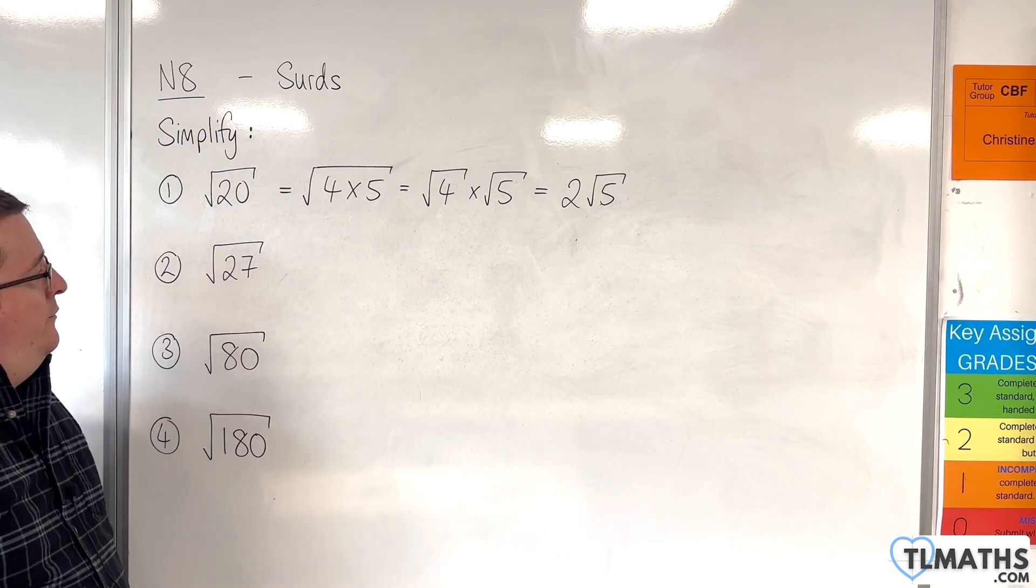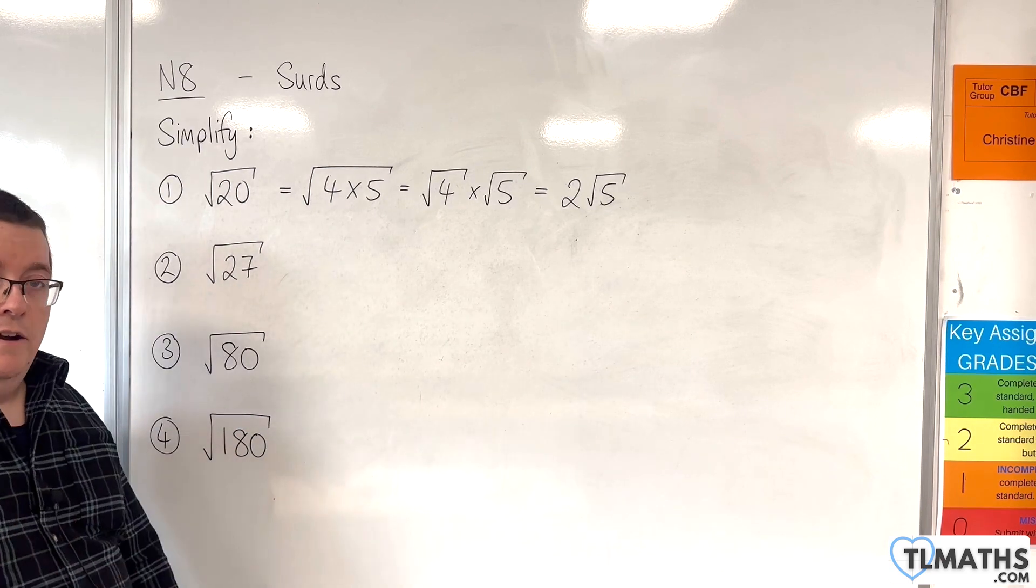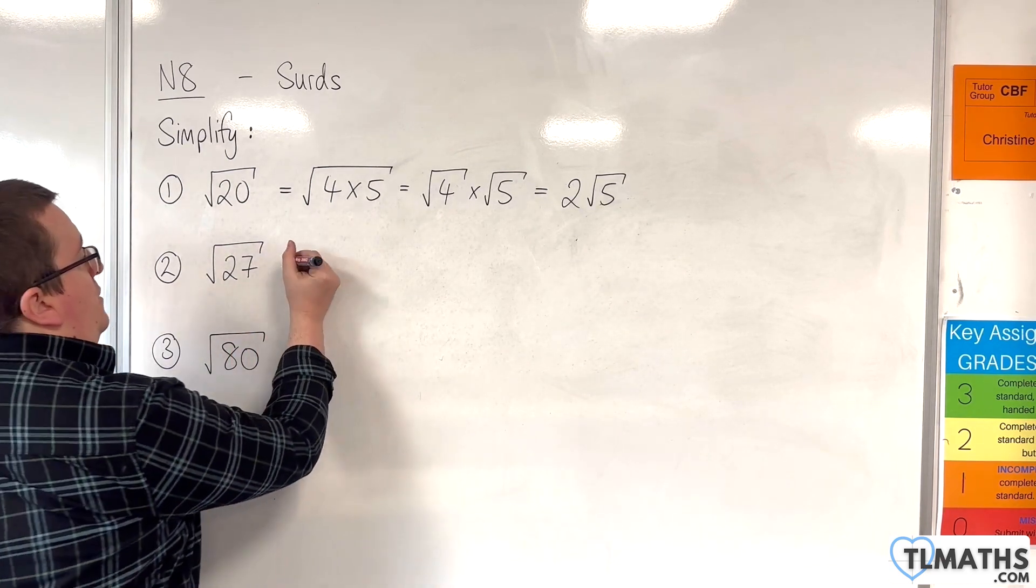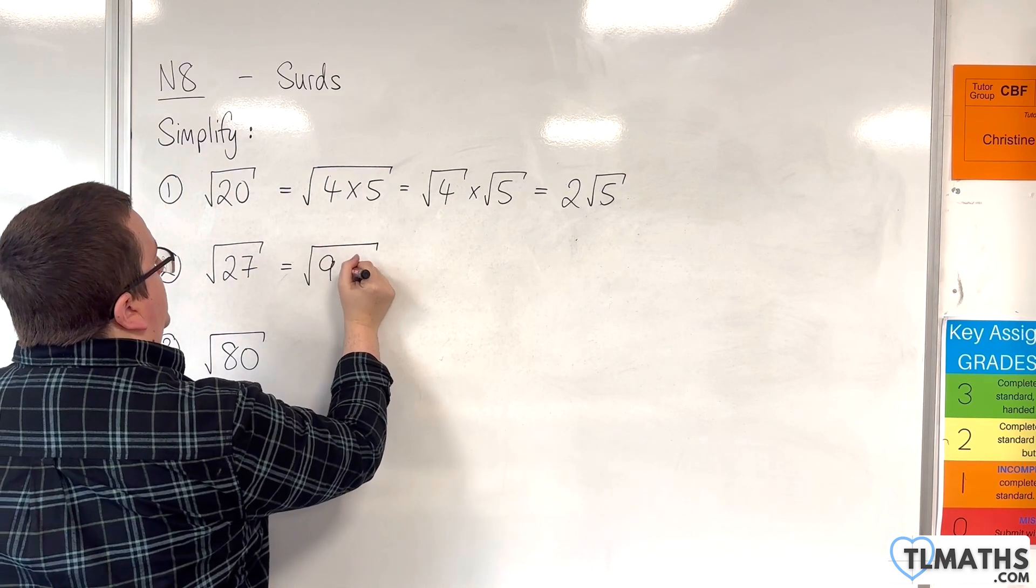The second one we have the square root of 27. Now a square number that goes into 27 would be 9. So 9 goes in 3 times. So we have the square root of 9 times 3.